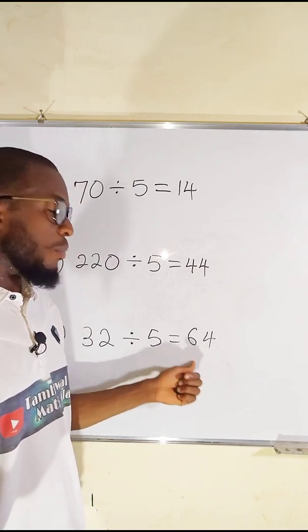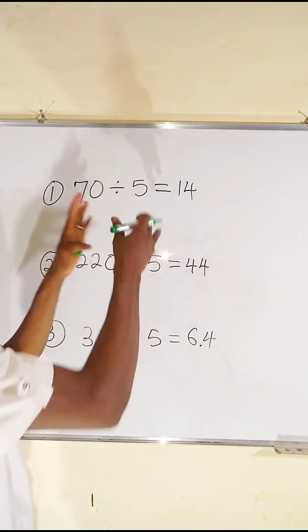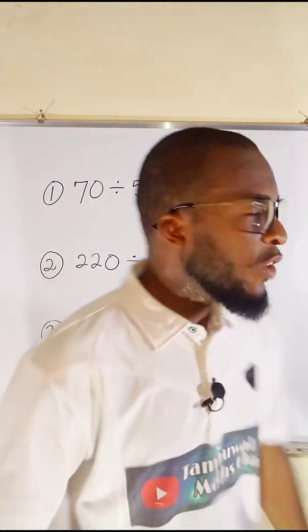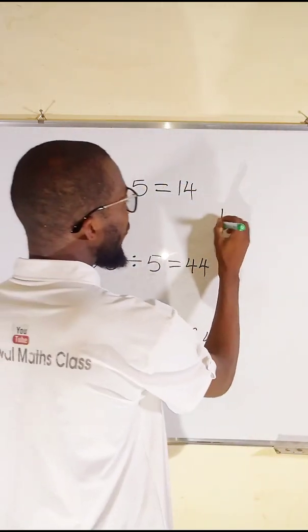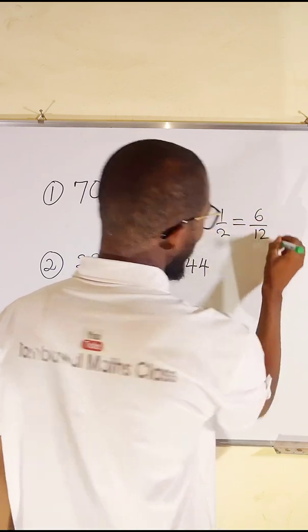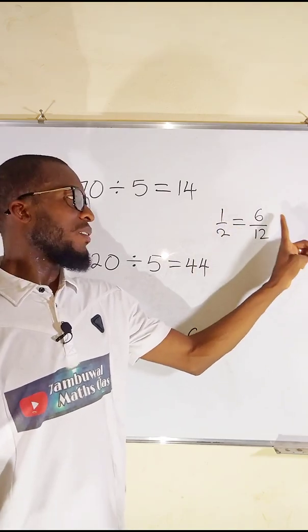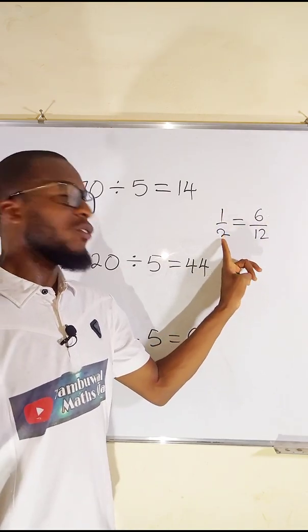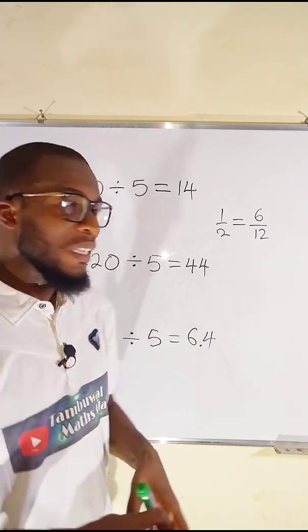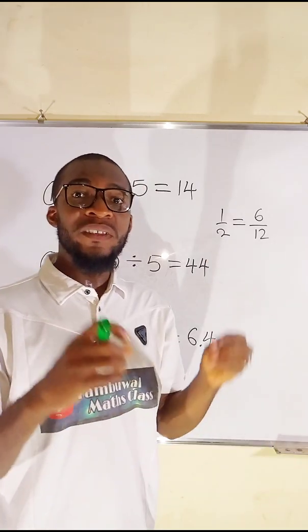But how is it possible? That's what I want to reveal in this tutorial. Remember equivalent fractions. If you have 1 over 2, this is the same as 6 over 12. Why? Because if you multiply 1 by 6 you are going to obtain 6, and if you multiply 2 by 6 you are going to obtain 12. What does this mean? It means that so far you multiply the numerator and denominator by the same value, the output is always equivalent to the initial value.